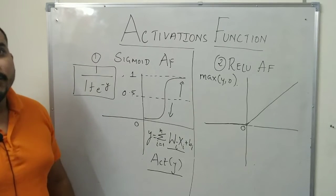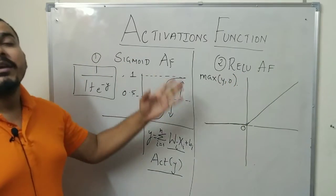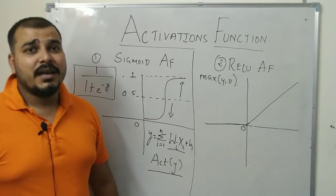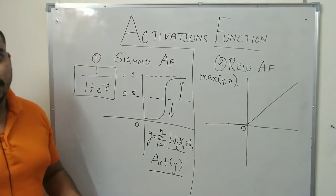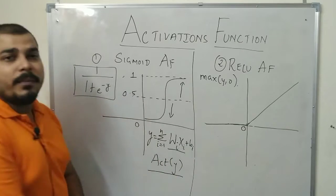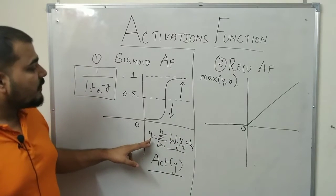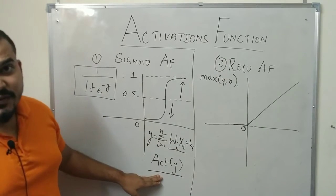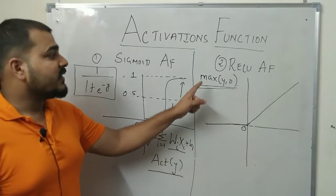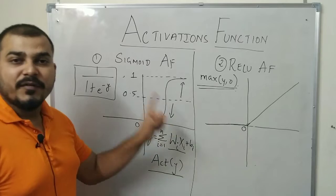This was all about sigmoid activation function. There is also another activation function called ReLU. In ReLU activation function, after this particular operation where we find the product of weights and the features plus the bias, this is passed to the ReLU activation function and a simple formula is applied: max of y comma 0. Y is basically the output of weights multiplied by the input feature plus bias.